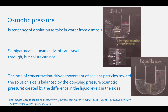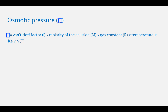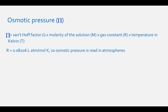The opposing pressure is called the osmotic pressure, represented by the capital Greek letter pi. The equation for osmotic pressure is: π = i × M × R × T, where i is the Van't Hoff factor, M is the molarity of the solution, R is the gas constant, and T is the temperature in Kelvin. The Van't Hoff factor is included because osmotic pressure depends on the concentration of solute. The gas constant R has a value of 0.08206 L·atm/mol·K, so osmotic pressure is measured in atmospheres.